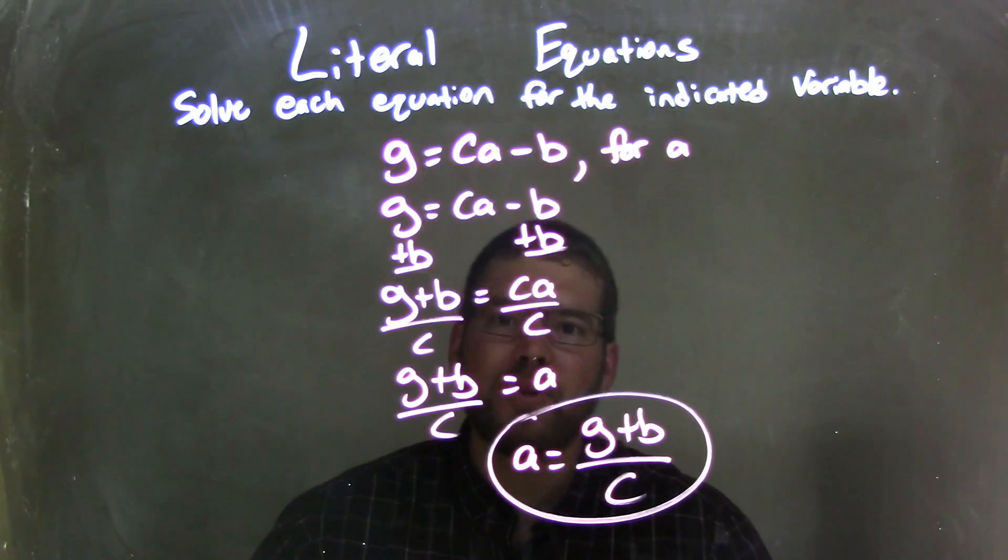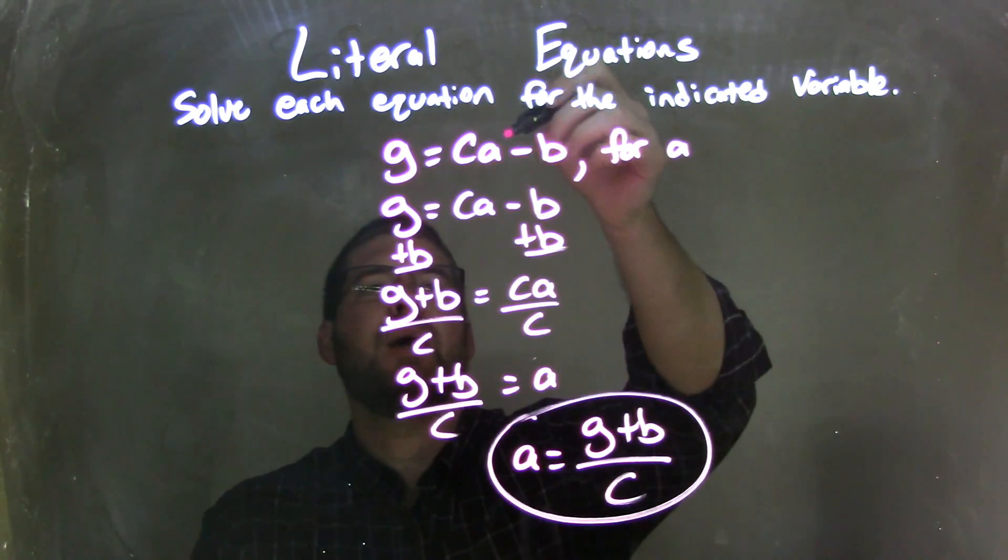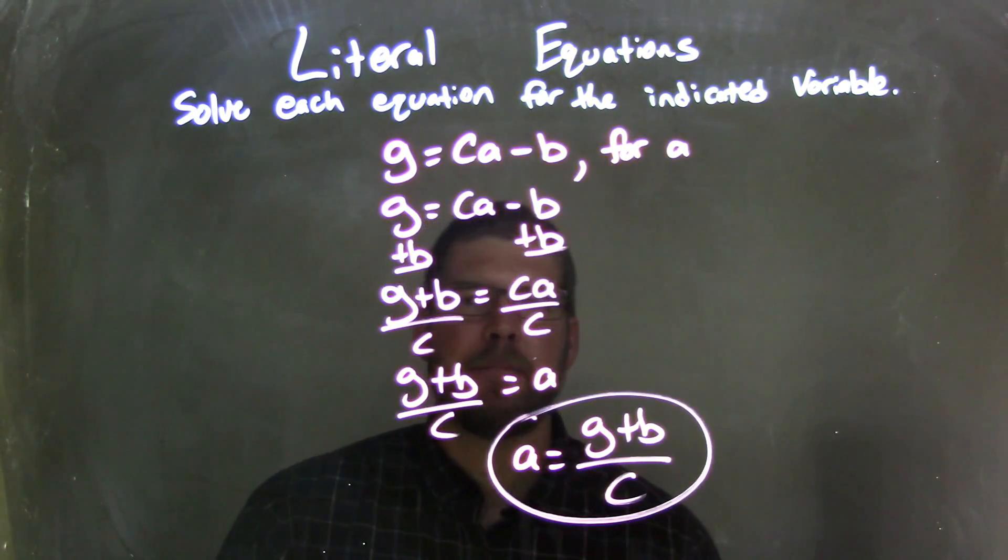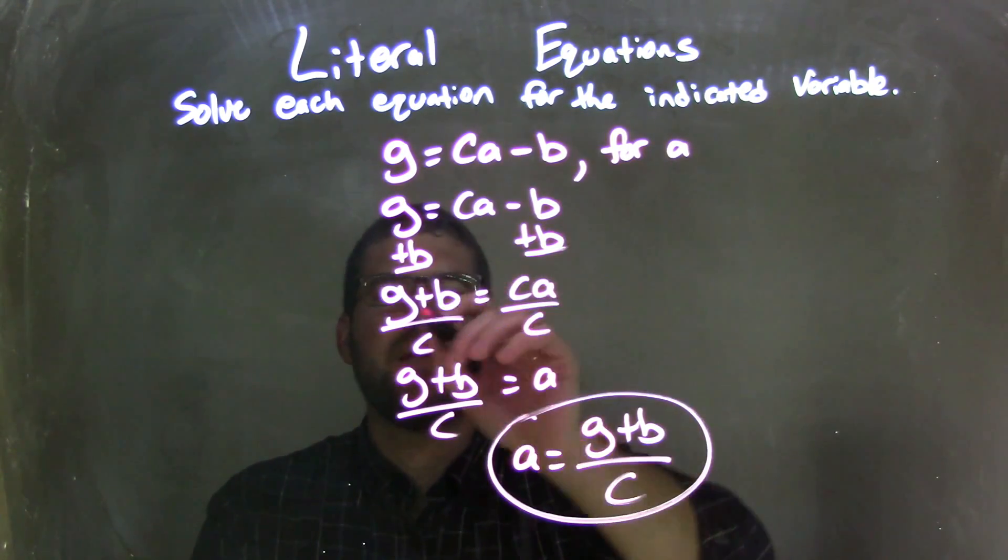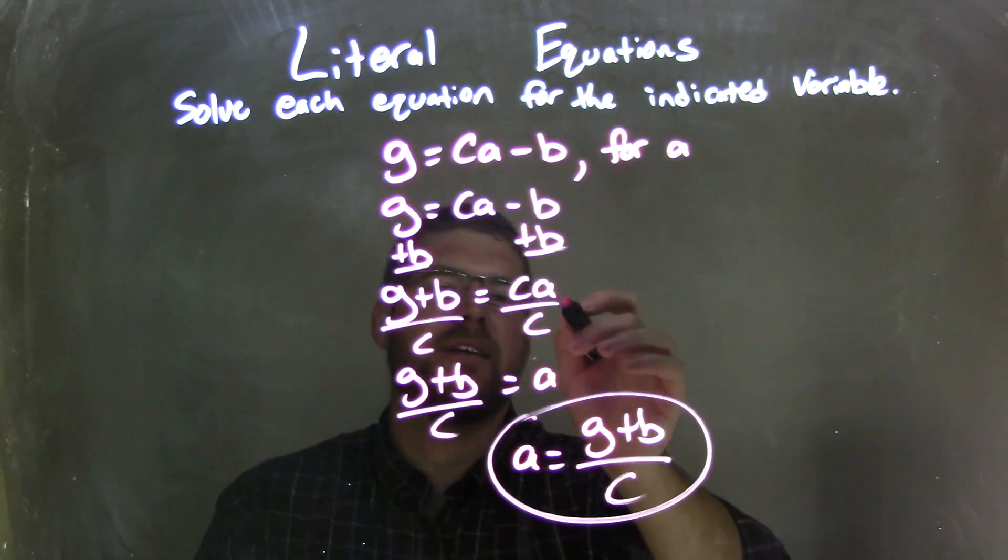Okay, so let's recap. We have G equals C times A minus B, and we're solving that for A. I rewrote my equation. I then added B to both sides to eliminate the B on the right. That gave me G plus B equals C times A.